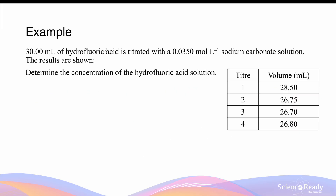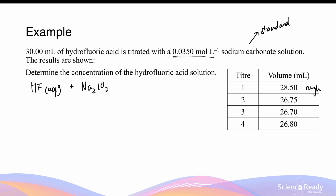30 millilitres of hydrofluoric acid is titrated with 0.035 mol per litre of sodium carbonate. Because we're given the concentration of the sodium carbonate, this is my standard solution. The results are shown in the table — we've got four different titer volumes. It's important to recognize that the first titer volume is the rough titration, as it is much higher compared to the other three. The reaction between hydrofluoric acid and sodium carbonate produces sodium fluoride, water, and carbon dioxide gas.